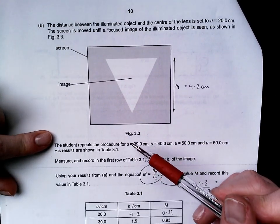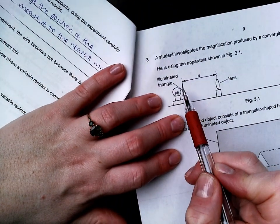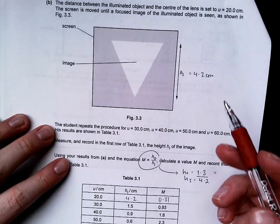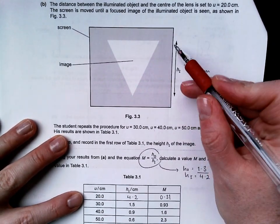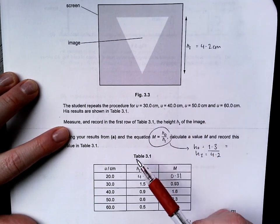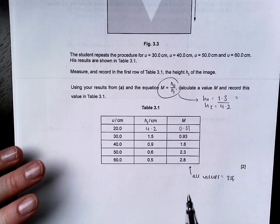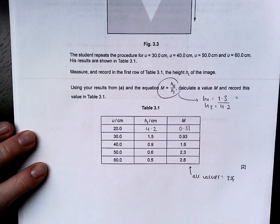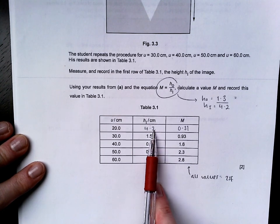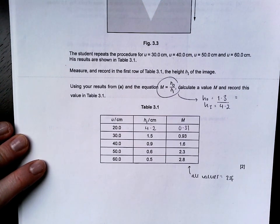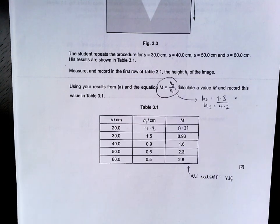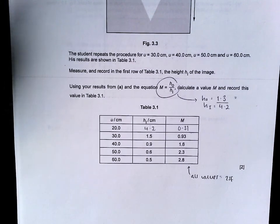The student repeats this for different U values. So they change the distance between the hole that the light is coming through and the lens. And then they measure the height of the image. It says, measure and record in the first row the height I of this image. And I got 4.2. Using your results from A and the equation M is HO over HI, calculate a value for M. HO is what I found on the previous page, 1.3, divided by 4.2, and I get 0.31.